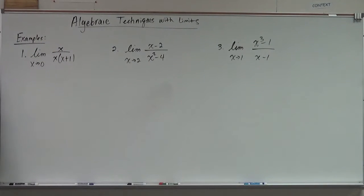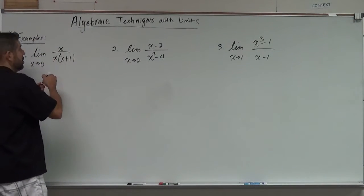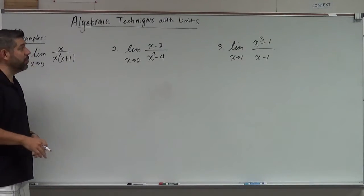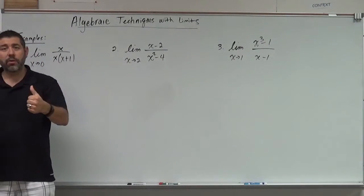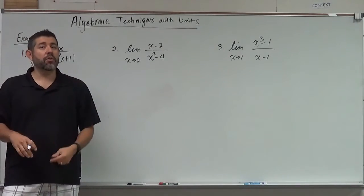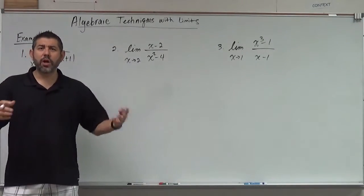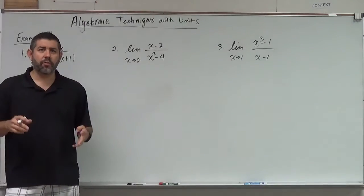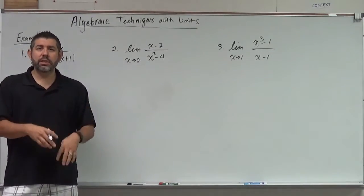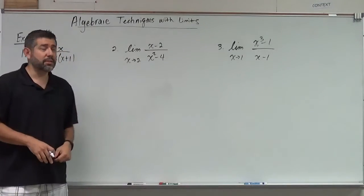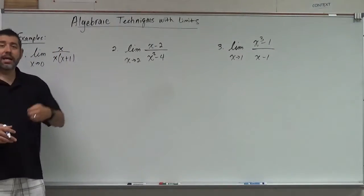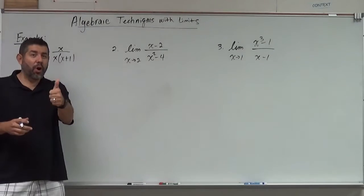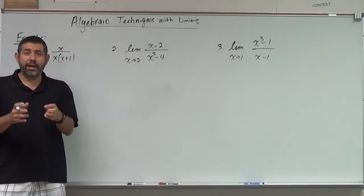What we're looking at is what happens if we have a limit where if we plug in zero, we get something called an indeterminate form. If I plugged in zero, I'd get zero over zero. Zero over zero is called indeterminate. We've got a few indeterminate forms. Zero over zero and infinity over infinity are the ones we're going to see most often. So what do we do if we have zero over zero? Tactic number one, go for algebraic techniques.